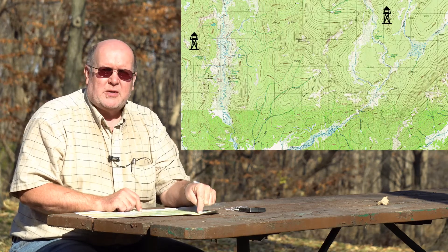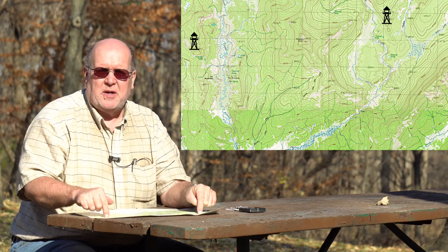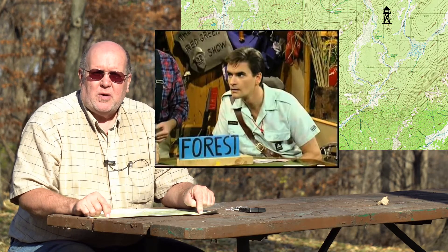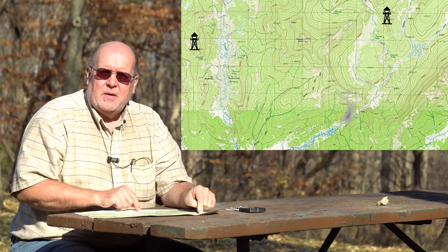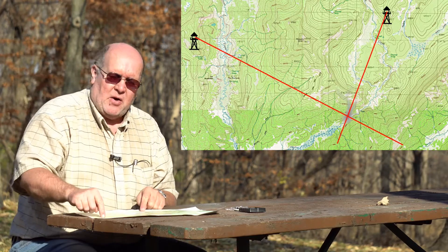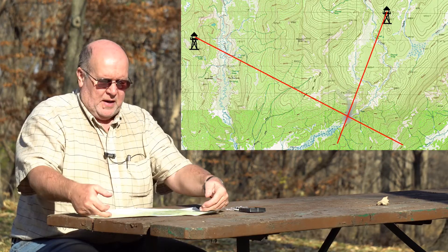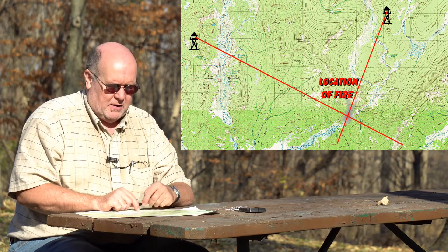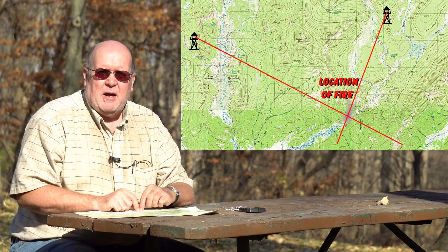Intersection is basically the same thing, but it's flipped around backwards. You have a person here and a person here on the landscape, and they're trying to find a location on the map. A prime example would be a Forest Service Watchtower here and a Forest Service Watchtower here — they both have rangers in them watching for forest fires. They see smoke here, so one takes a bearing, one takes a bearing, they communicate with each other, and they can use those bearings to identify the location of the smoke on the map. They can check to see if there are any campers registered in that area.